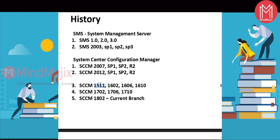In November 2015 — that is, version 1511, where 15 is the year and 11 is the month — Microsoft changed the naming convention again. They stopped using SP1, SP2 terminology and instead started using year and month. They planned to release three versions of SCCM per year. In 2016, three versions were released; in 2017, three versions; and in 2018, two versions: 1802 and 1806. So 1806 is the current branch.